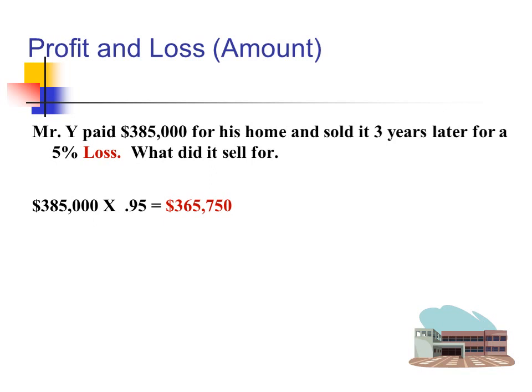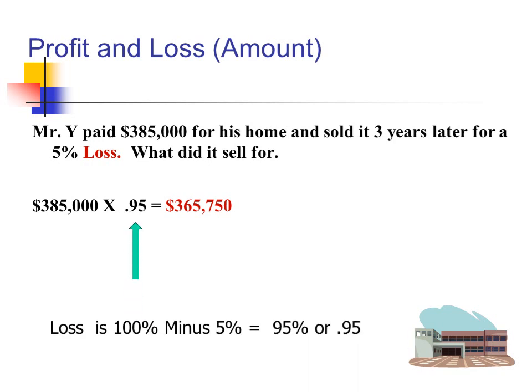As far as losses, Mr. Y paid $385,000 for his home and sold it three years later for a 5% loss. What did he sell it for? We take our original acquisition cost of $385,000 and multiply it by 0.95 — that's the 100% of what we bought it for minus the 5% loss. Our answer is $365,750, which represents a 5% loss from what we originally acquired the property for.